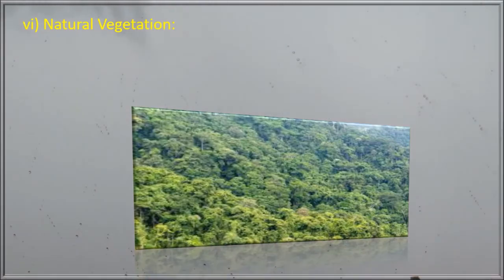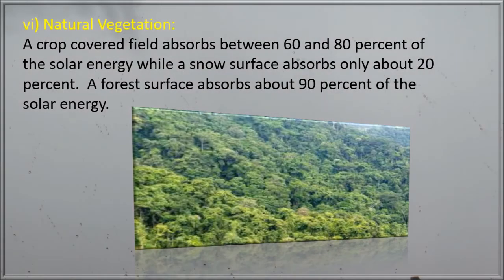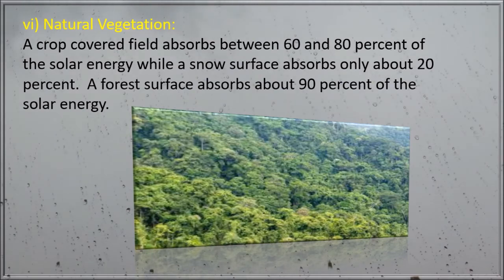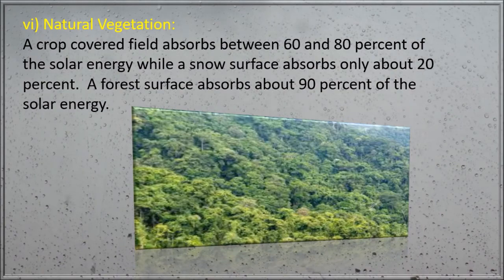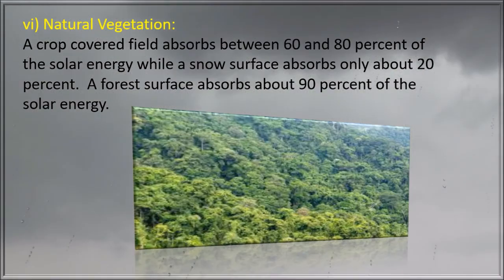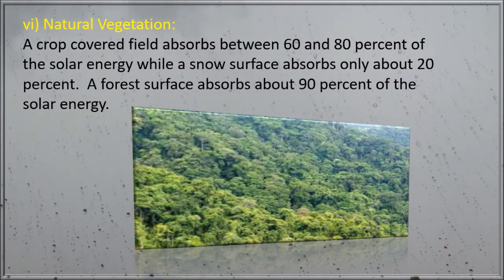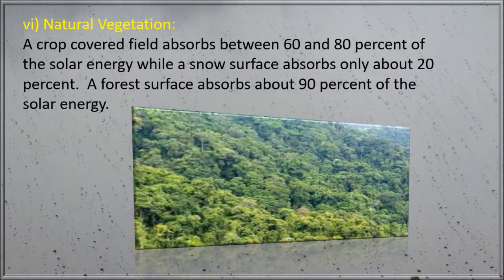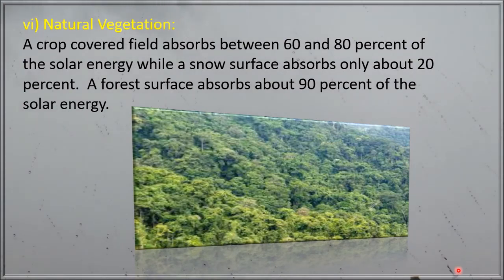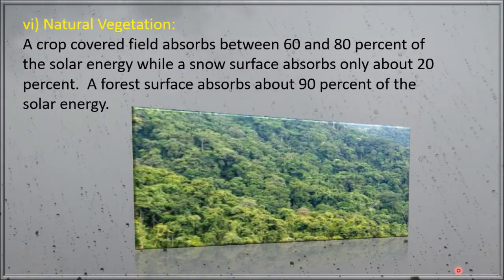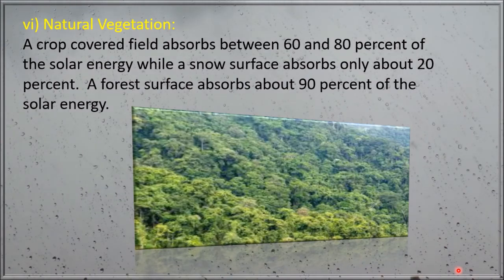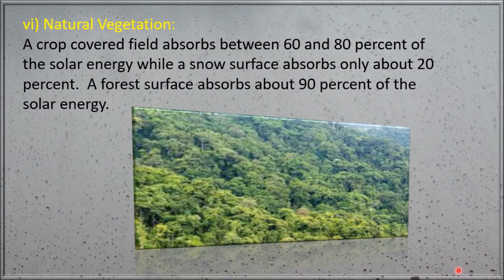The last factor is natural vegetation. A crop-covered field absorbs between 60 and 80 percent of the solar energy, while a snow surface absorbs only about 20 percent. A forest surface absorbs about 90 percent of the solar energy, so forested areas bring down the temperature of a place. That's why the temperature in cities is much higher than that of villages.